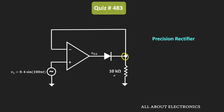So if you know this, then whenever this input is equal to 0.4V, then the output at this node will also be equal to 0.4V. And if we include the voltage drop across the diode, then the voltage at this node, or this VOA, will be equal to 1V.